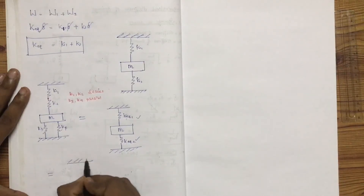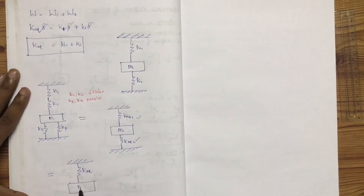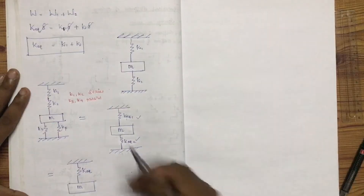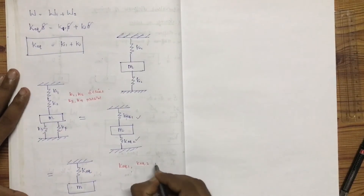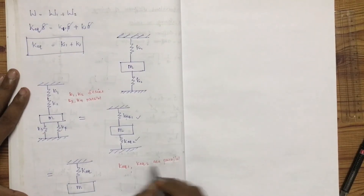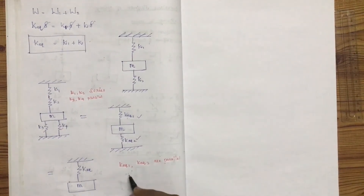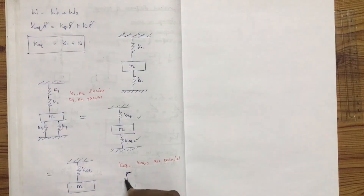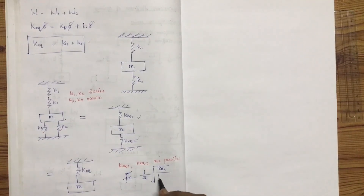Here we have a fixed point with K equal to 0, and a mass where K1 equals 1 and K2 equals 1 are in parallel. The natural frequency Fn equals one half times the square root of K divided by mass.